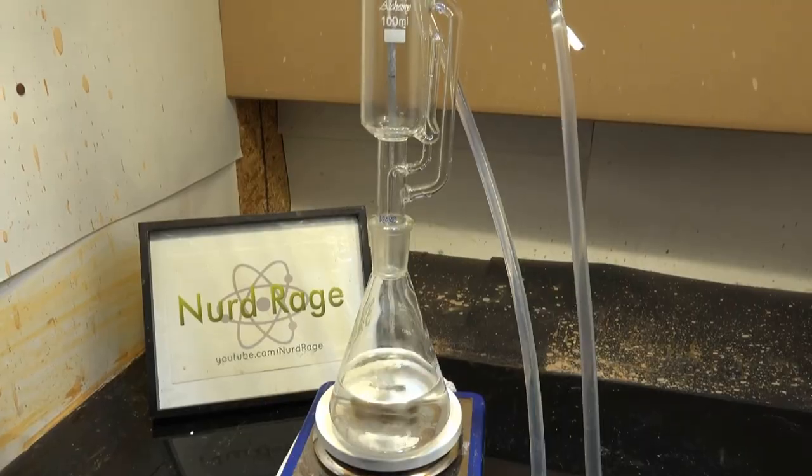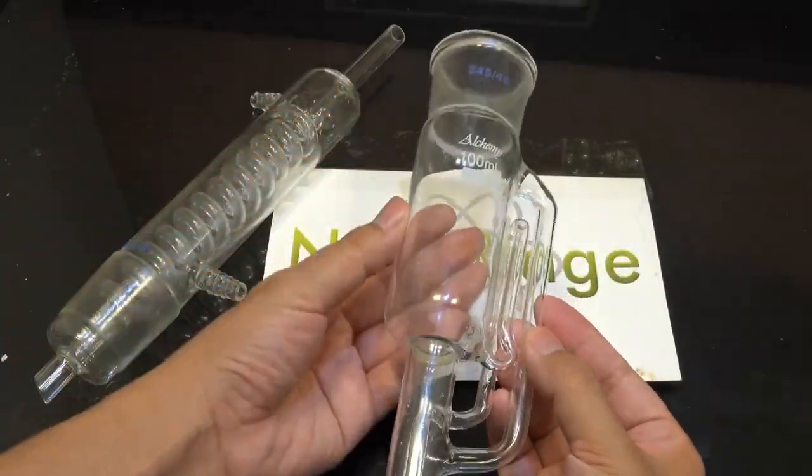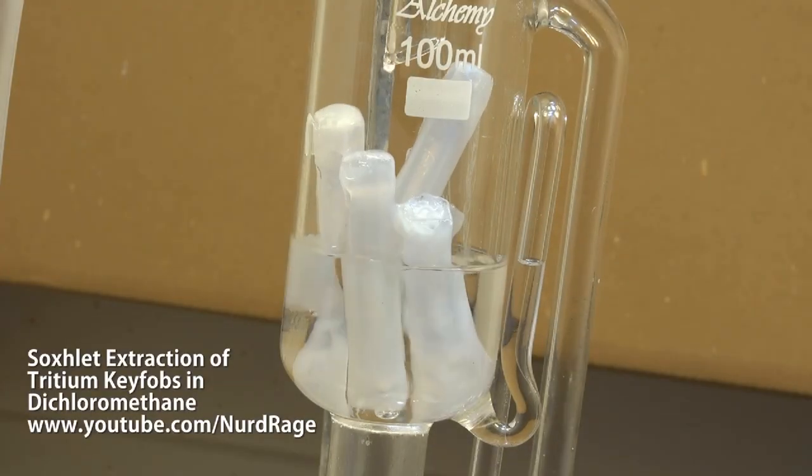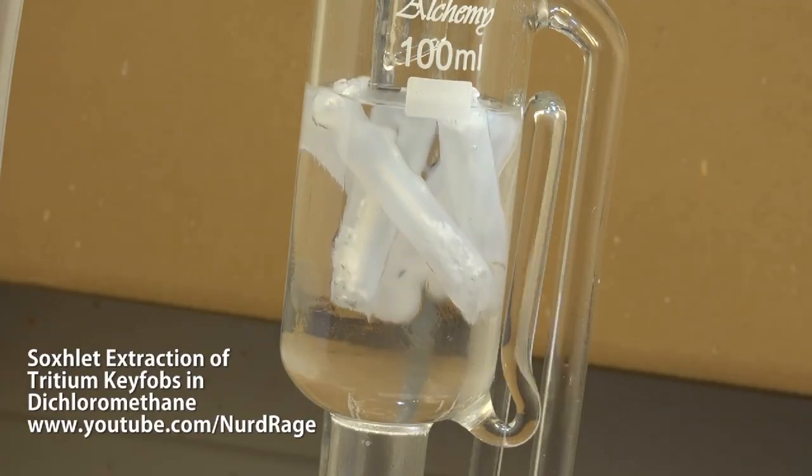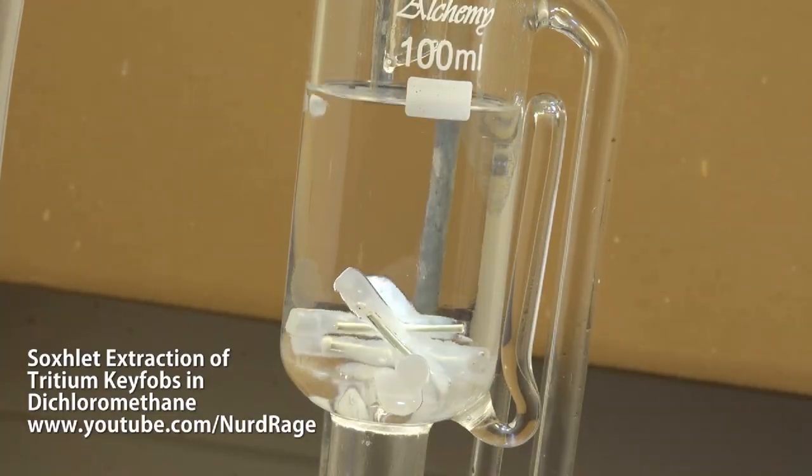Normally a chemist would use a setup like this. This is footage stolen from NerdRage, if you don't know him, go check him out. Anyway, the key feature here is the Soxhlet Extractor. It is a device that you can load up with stuff and it will automatically cycle fresh solvent through it.